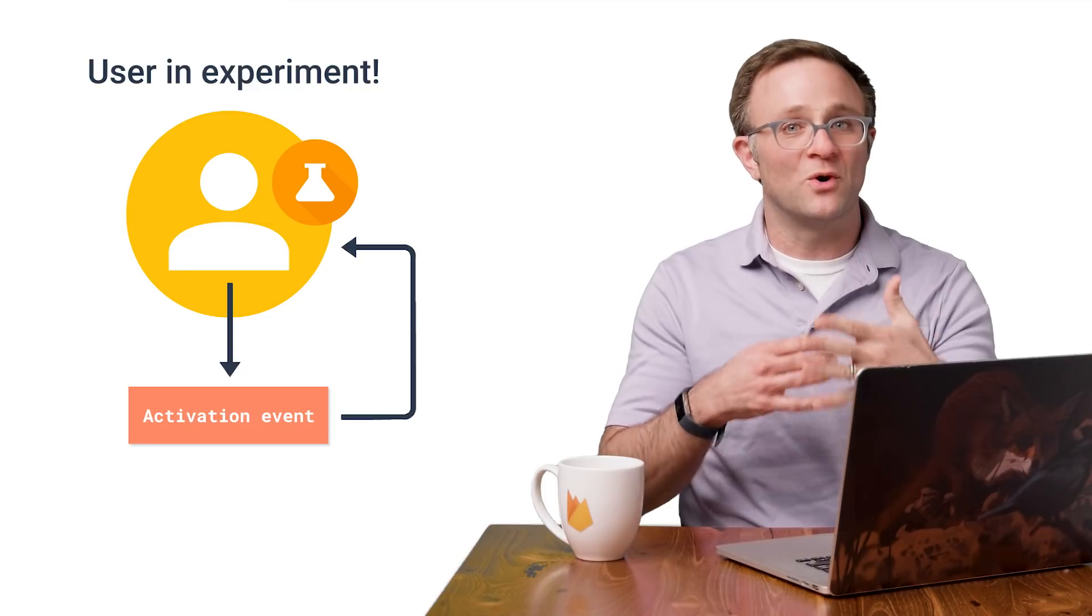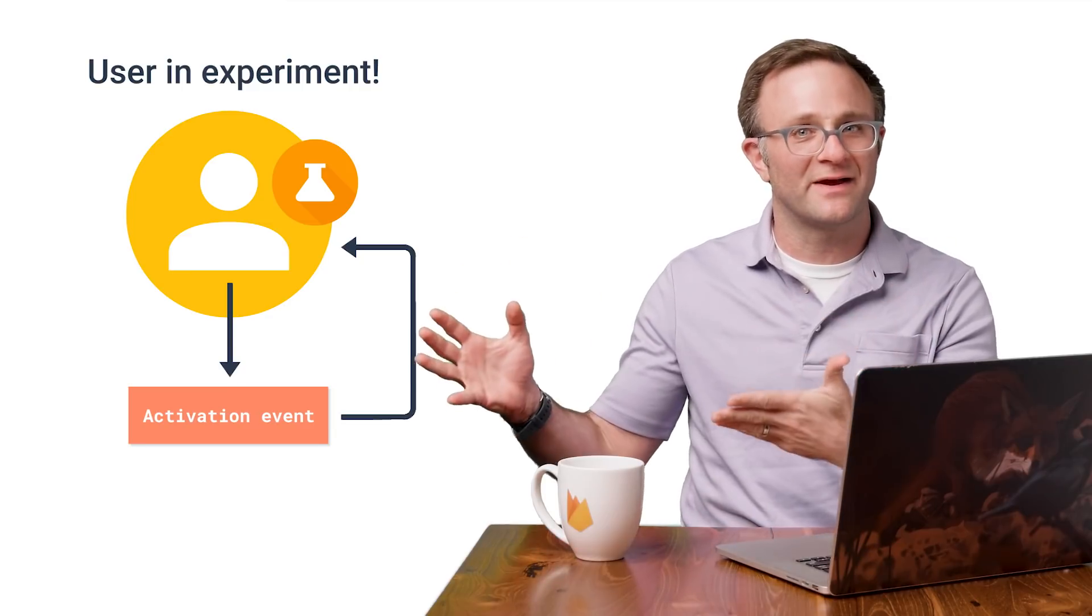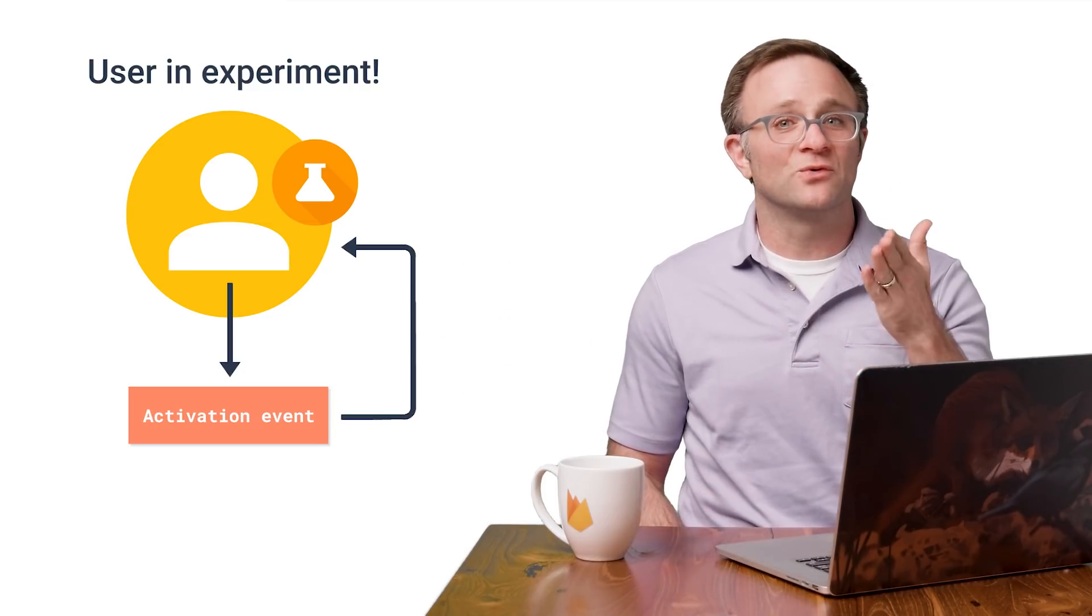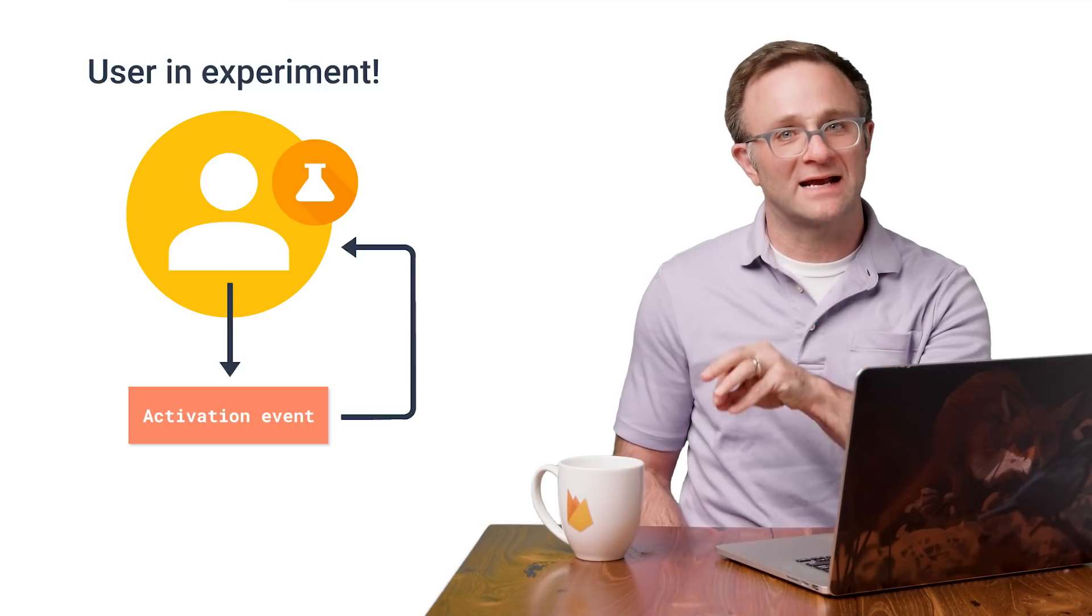I mean, yes, they'll still be receiving whatever remote config parameters you've sent down to this variant, but they won't be included in any of your results until they first trigger the activation event. So when would you want to use this? Well, generally speaking, you want to do this when you think there's only a subset of your audience who's going to be exposed to your A-B test in the first place.